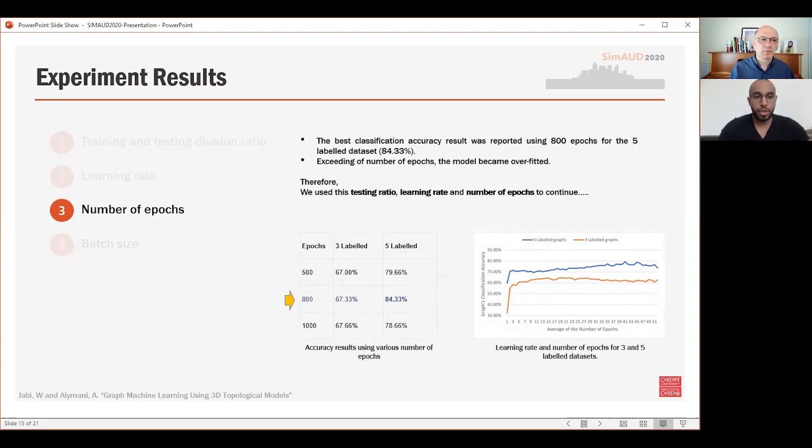The number of epochs in neural network training is the number of complete iterations through the training dataset. We tried 500, 800, and 1000 epochs. We achieved the best classification accuracy, 84.33%, by using 800 epochs for the 5-label dataset, which is higher than the last two steps by almost 5%. With exceeding the number of epochs, the model became overfitted. So we used this setting to continue with our sensitivity analysis.